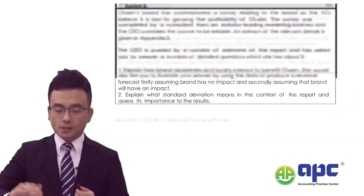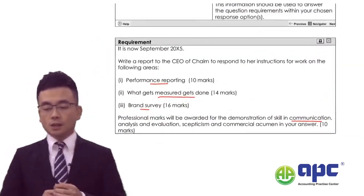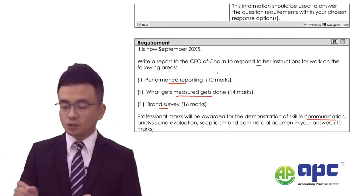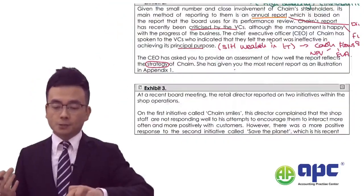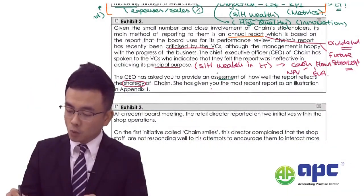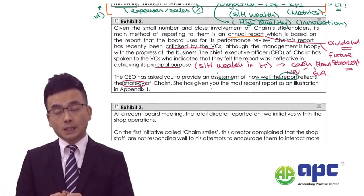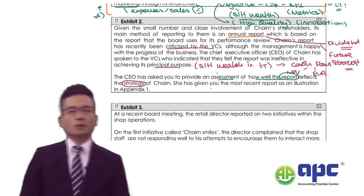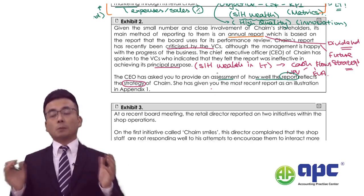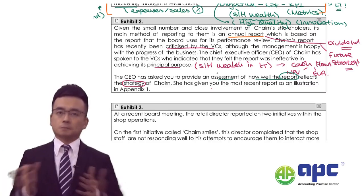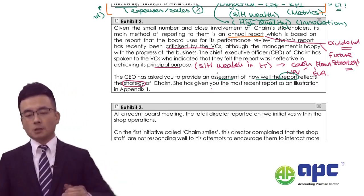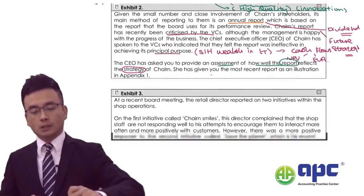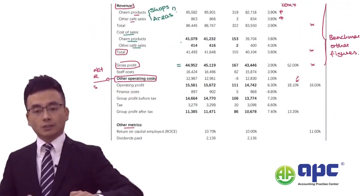Reading back to Requirement One, you are asked to write a report responding to the instructions from Exhibit 2: to assess how well the report reflects the strategy — not how well the company is doing. If a student's answer talks about 'this company is doing great', there are no marks for that, because the examining team is asking about how well the report reflects strategy rather than whether the company is doing great.